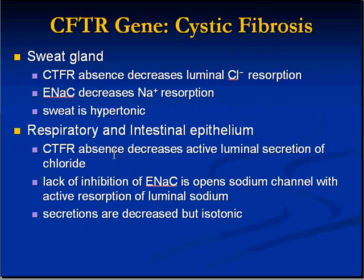With cystic fibrosis, in the sweat gland the channel is blocked, and therefore there's decreased luminal chloride resorption. Because chloride goes with sodium, you now have a hypertonic sweat, and that hypertonic sweat is making the mucus along the surface of the cell more thickened — because hypertonic mucus is thick mucus — and it can plug up the whole gland. If it blocks the gland, you can get infections, and that's exactly what happens with cystic fibrosis.